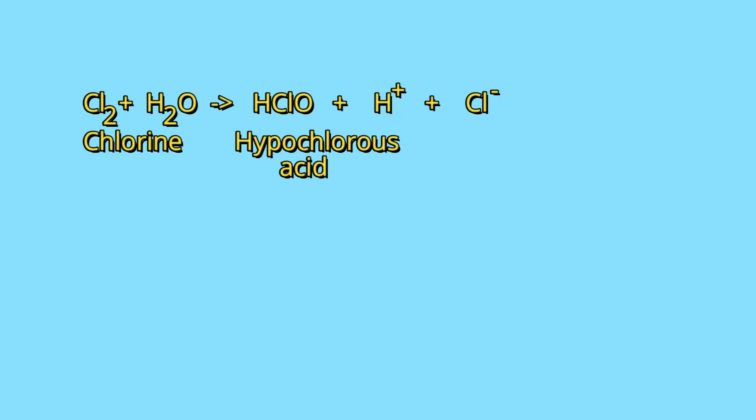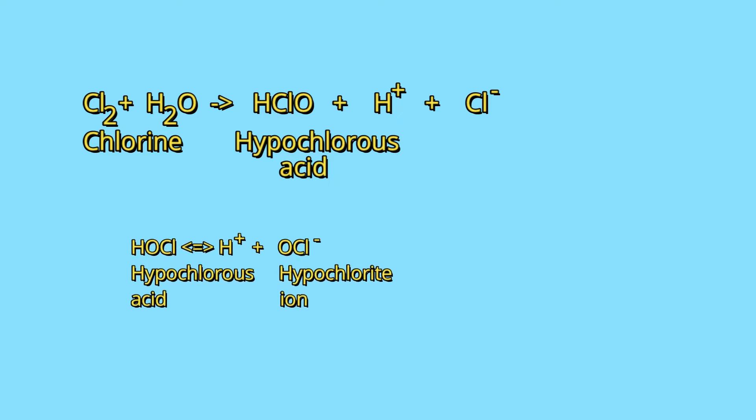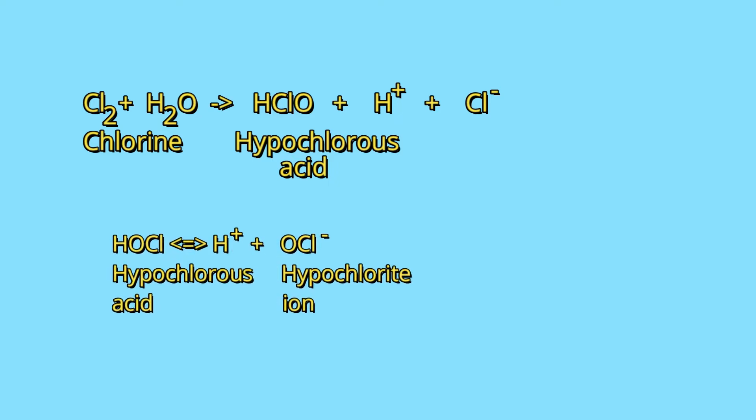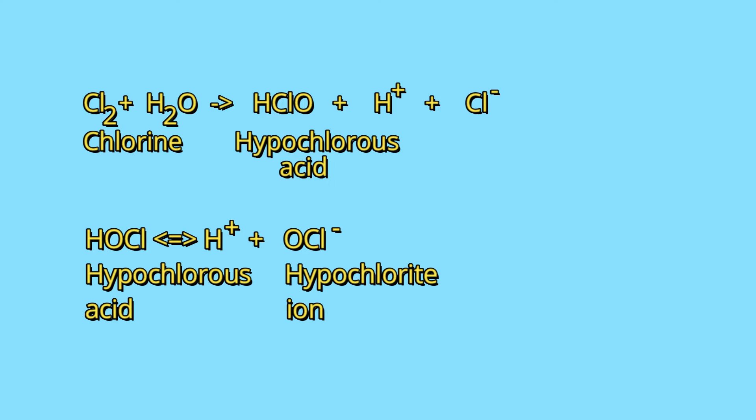Hypochlorous acid, being a weak acid, will dissociate according to its equilibrium constant, and the concentrations of chlorine species will be a function of pH.